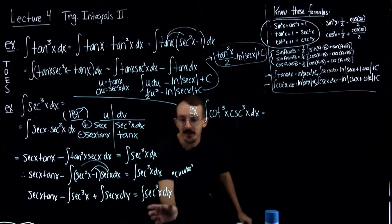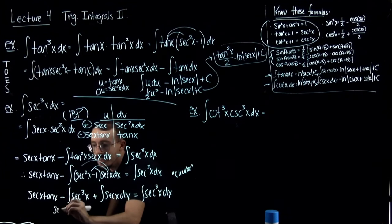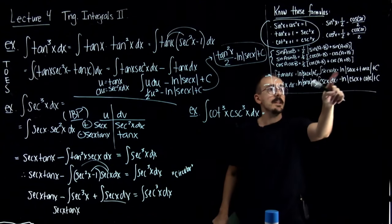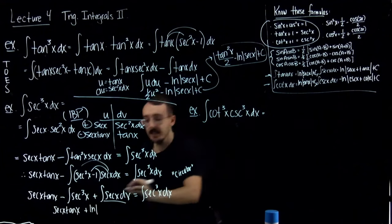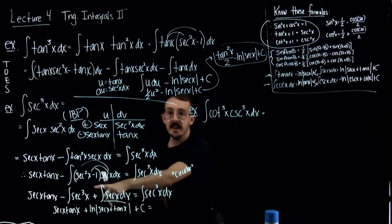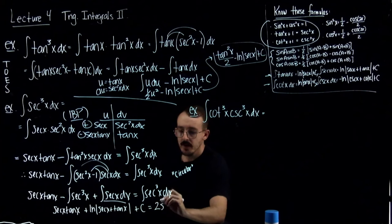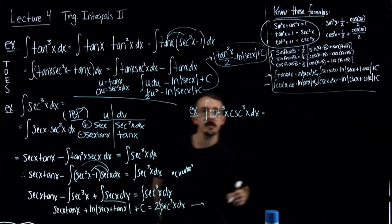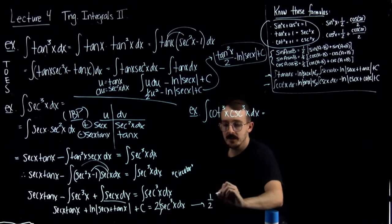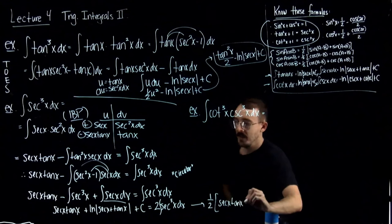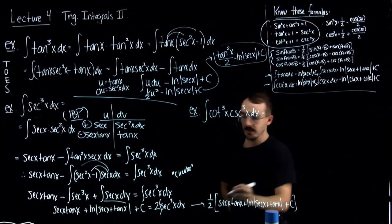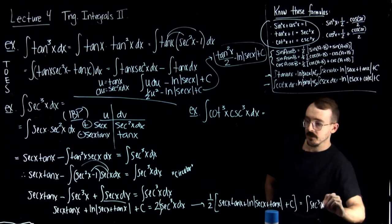I add the integral of secant cubed over to the right side. Using our rule that the integral of secant is ln of absolute value of secant x plus tangent x, I get: secant x tangent x plus ln absolute value of secant x plus tangent x plus C equals 2 times the integral of secant cubed x dx. Dividing by 2, the final answer is one half times secant x tangent x plus ln absolute value of secant x plus tangent x, plus C.